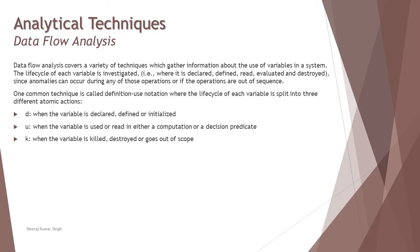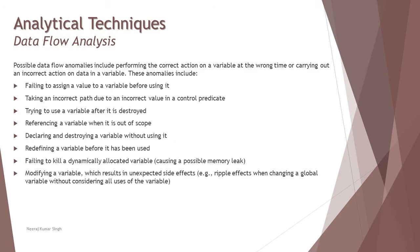D stands for when the variable is declared, defined or initialized. U stands for use—that means when the variable is used or read in either a computational or decision predicate. K stands for killed—that means destroyed, when the variable is killed or destroyed or goes out of scope. That's the basic life cycle of a variable which must be followed when you write any kind of program or code.